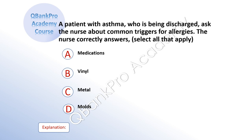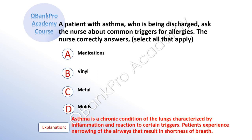A patient with asthma who is being discharged asks the nurse about common triggers for allergies. The nurse correctly answers — select all that apply: A, medications. B, vinyl. C, metal. D, molds. The correct answer is A, medications, C, metal, and D, molds. Explanation: Asthma is a chronic condition of the lungs characterized by inflammation and reaction to certain triggers. Patients experience narrowing of the airways that results in shortness of breath.